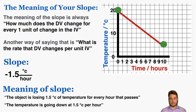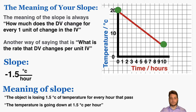One last example: we're measuring the temperature of an object in degrees Celsius over time measured in hours, and the slope is negative 1.5 degrees Celsius per hour. The meaning of that slope is that the object is losing 1.5 degrees Celsius of temperature for each hour that passes. That's how you understand the meaning of slope.